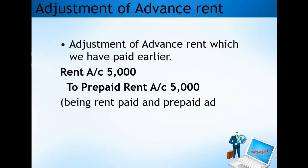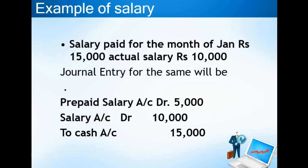Another example is salary. Suppose salary paid for January is Rs. 15,000 but the actual salary is Rs. 10,000. The person is taking Rs. 5,000 in advance, so that is prepaid salary — and prepaid salary is an asset. The journal entry for January: Prepaid Salary debit Rs. 5,000, Salary expense debit Rs. 10,000, and Cash credit Rs. 15,000, since Rs. 15,000 is going out.